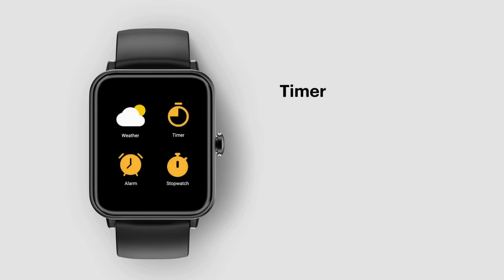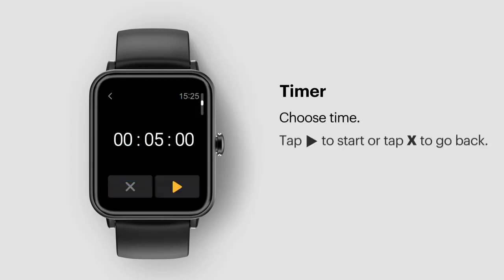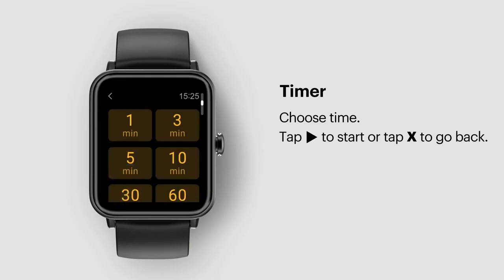Timer: go to the timer and choose a time or set your own time. Tap play to start, or tap X to go back.